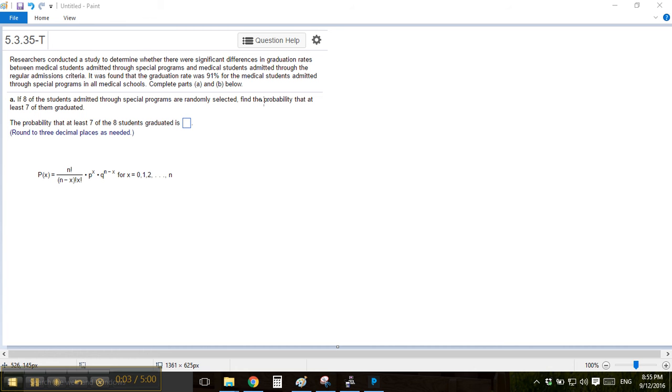Alright, so for this question, what we need to see here is that they have this graduation rate of 91%, and then if 8 are randomly selected, find the probability that at least 7 graduated.